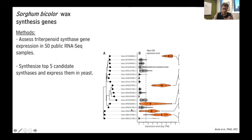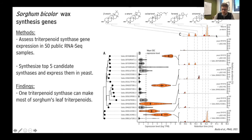We took those genes, had them synthesized, and put them into yeast cultures to see if the yeast could make the triterpenoids found on the surface of the sorghum leaf. The top panel shows a chromatographic trace of those leaf surface products: beta-amyrin, alpha-amyrin, fernenol, and above all simiarenol — as well as a little isoarborinol. When we gave the first sorghum OSC gene to yeast, it was able to make beta and alpha-amyrin.